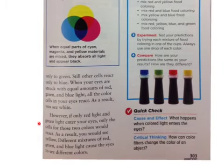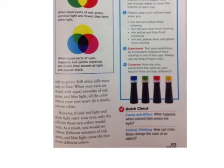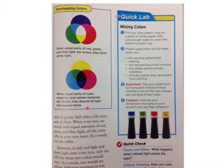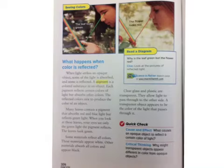However, if only red light and green light enter your eyes, only the cells for those two colors would react. As a result, you would see yellow. Different mixtures of red, green, and blue light cause the eyes to see different colors. Take a look at the picture up top. When equal parts of red, green, and blue light are mixed, they form white light. When equal parts of cyan, magenta, and yellow materials are mixed, they absorb all the light and they appear black.